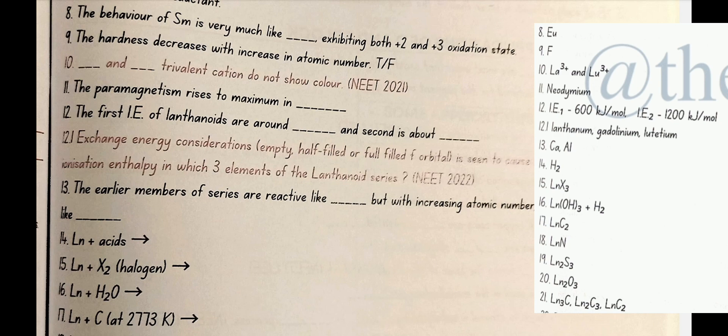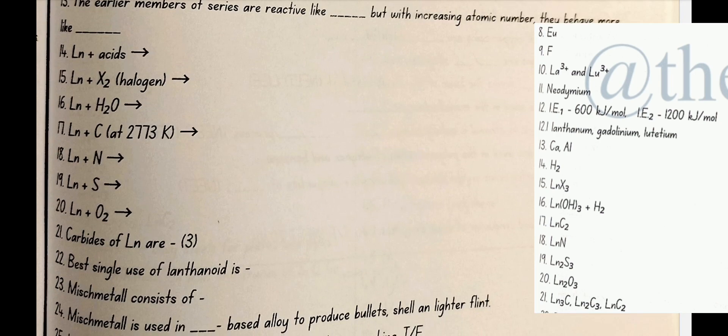The earlier members of series are reactive like calcium but with increasing atomic number they behave more like aluminium. Ln plus acids gives H2. Ln plus X2 halogen gives LnX3. Ln plus H2O gives Ln2O3 plus H2. Ln plus C at 2773 kelvin gives LnC2. Ln plus N gives LnN. LnS gives Ln2S3. Ln plus O2 gives Ln2O3. Carbides of Ln are Ln3C, Ln2C3, LnC2.